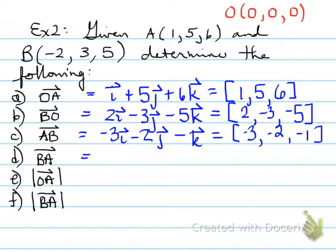So that component form versus using i, j, and k. B to A: B to A is the opposite of A to B, so we change the signs. And when we change the signs, that's going to equal [3, 2, 1]. Next one.